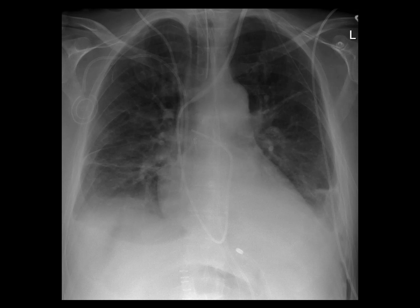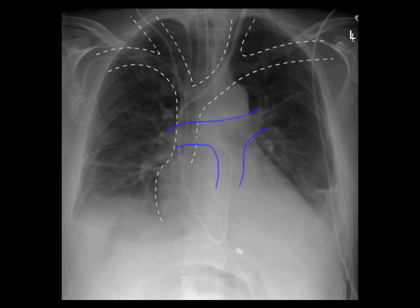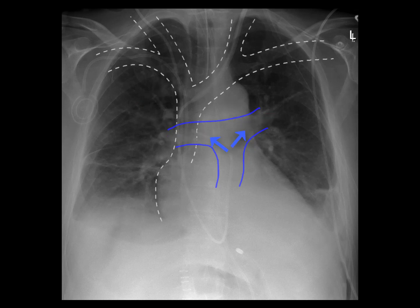The first device I'd suggest looking for on every image is the endotracheal tube, checking its position relative to the carina. Next, I suggest you look at the vascular catheters, and to assist you in that, we've outlined internal jugular veins, subclavian veins, brachiocephalic veins, and SVC, as well as the approximate location of the pulmonary arteries.